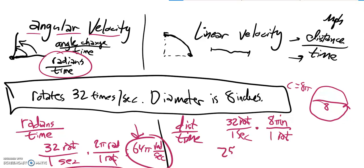So 256 pi inches per second, distance per time. It's a linear velocity. That many inches per second.